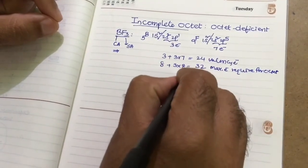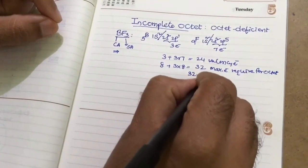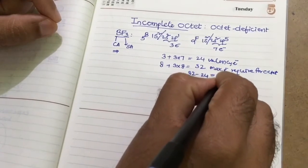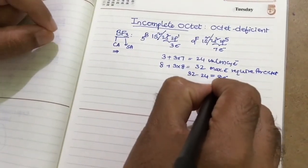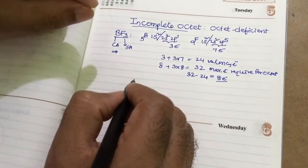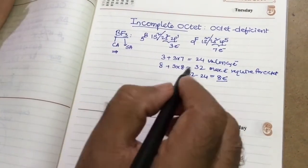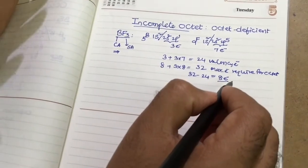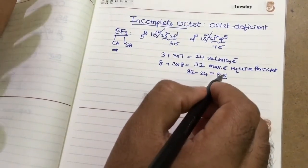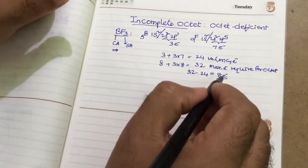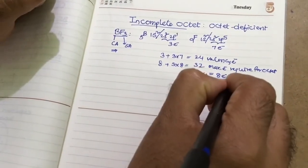Now, 32 minus 24, we will get 8 electrons. It's indicating here, in between this 1 boron and 3 fluorine, total 4 atoms. That 4 atoms require 8 electron bonds. It means each bond, 1 bond means 2 electrons. So total, how many bonds will it form?